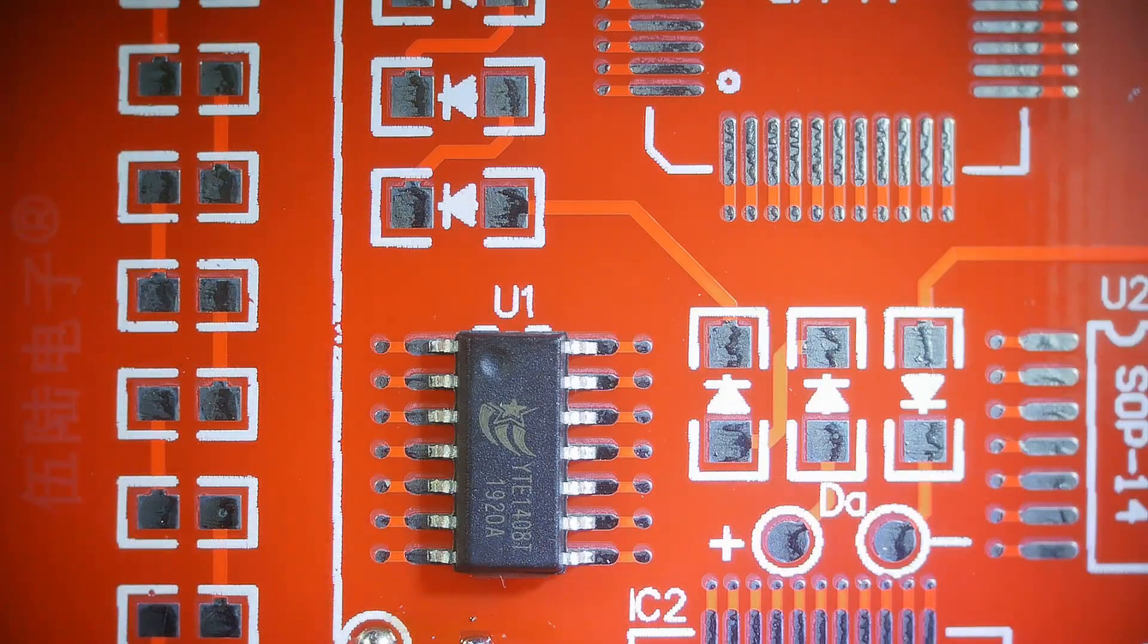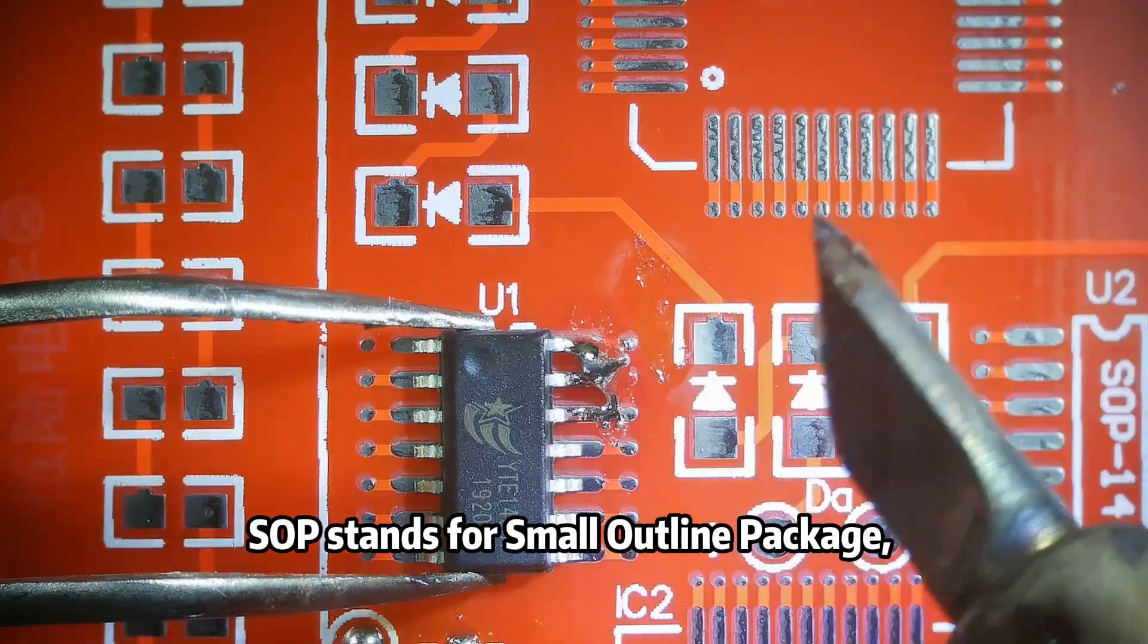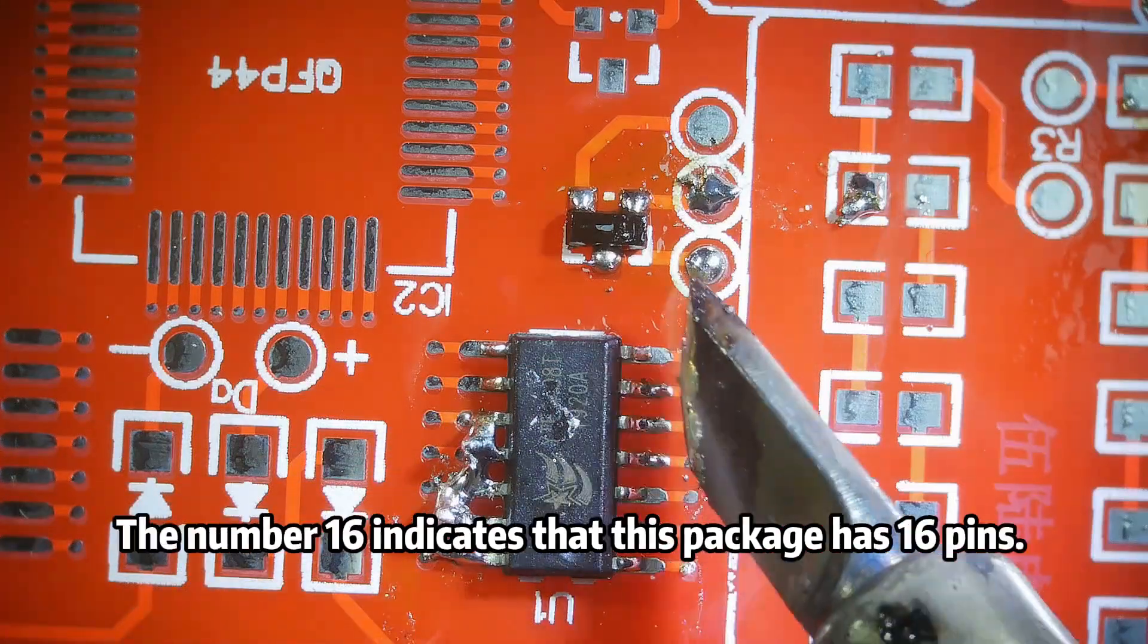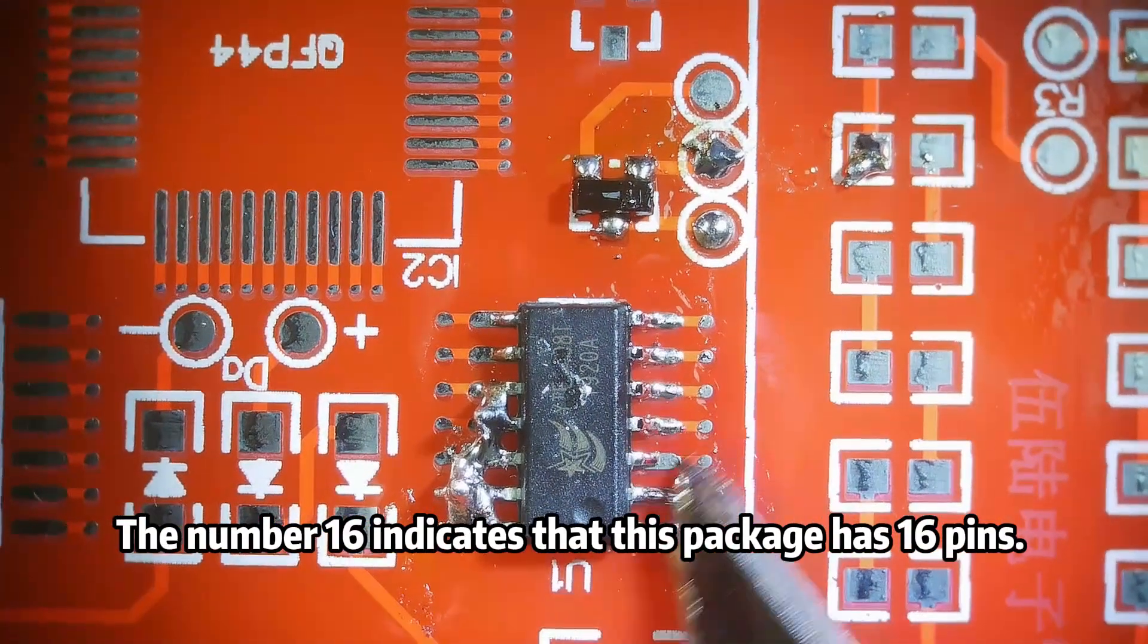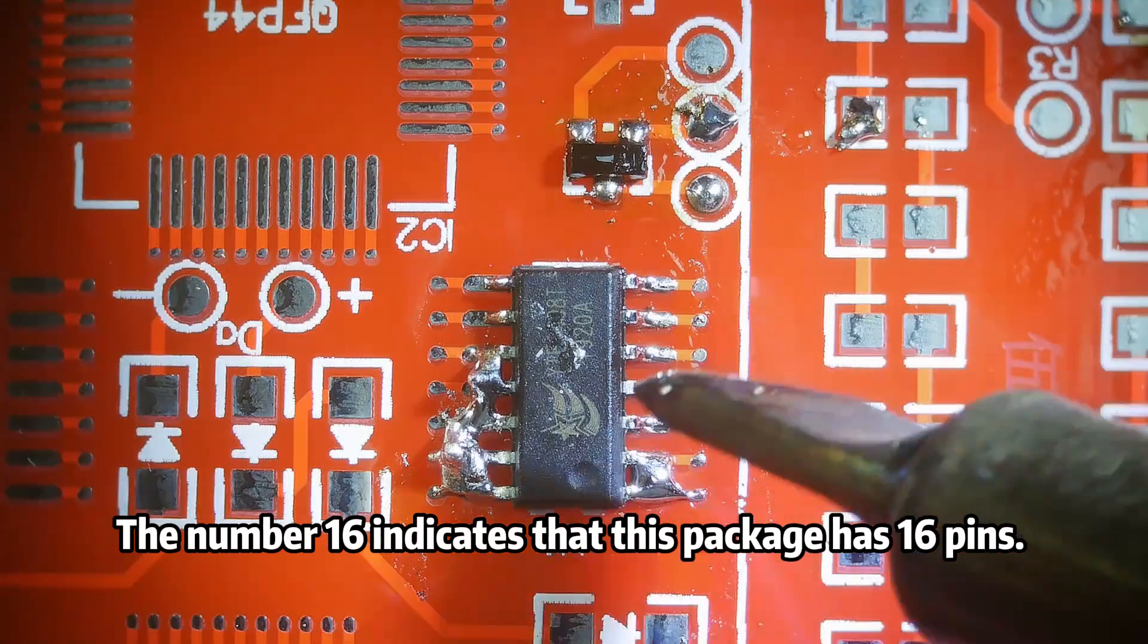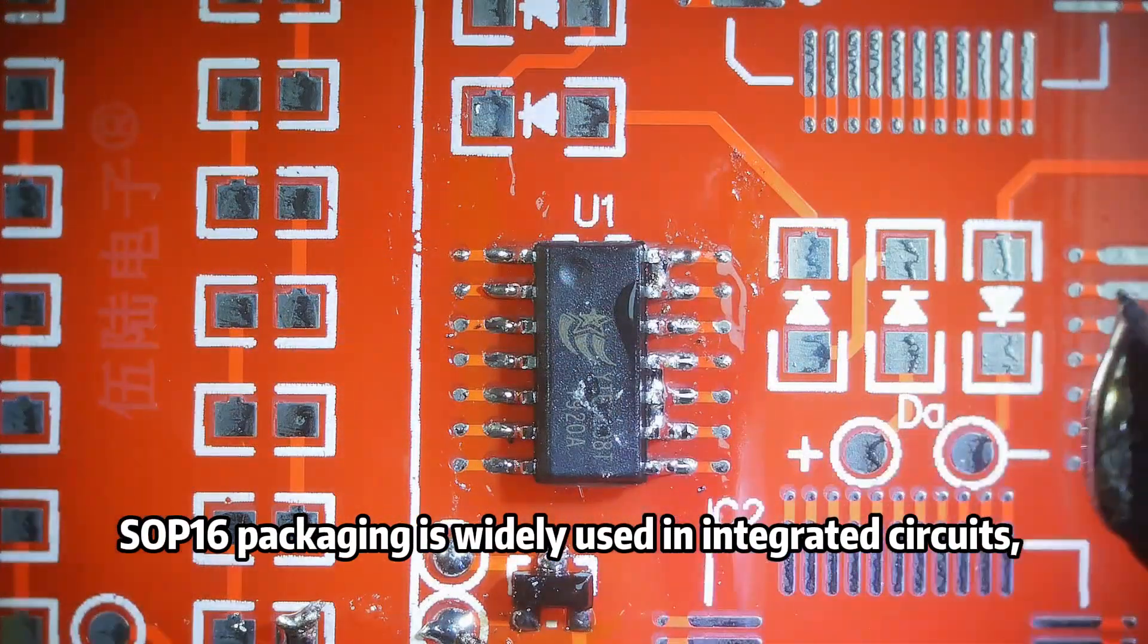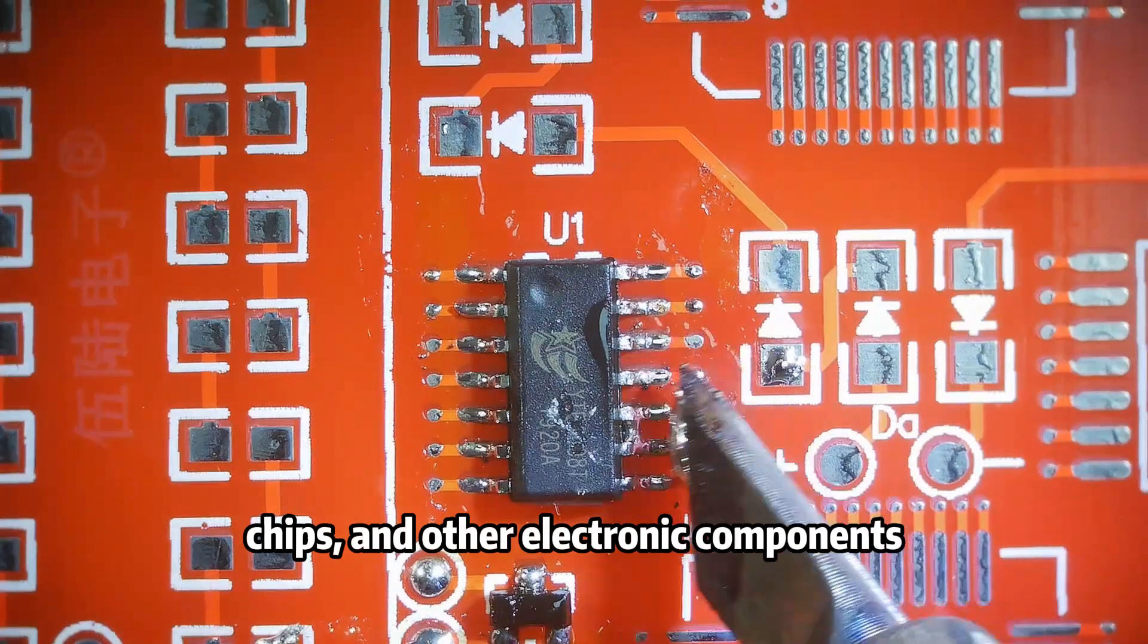SOP-16 stands for Small Outline Package. The number 16 indicates that this package has 16 pins. SOP-16 packaging is widely used in integrated circuits, chips, and other electronic components.